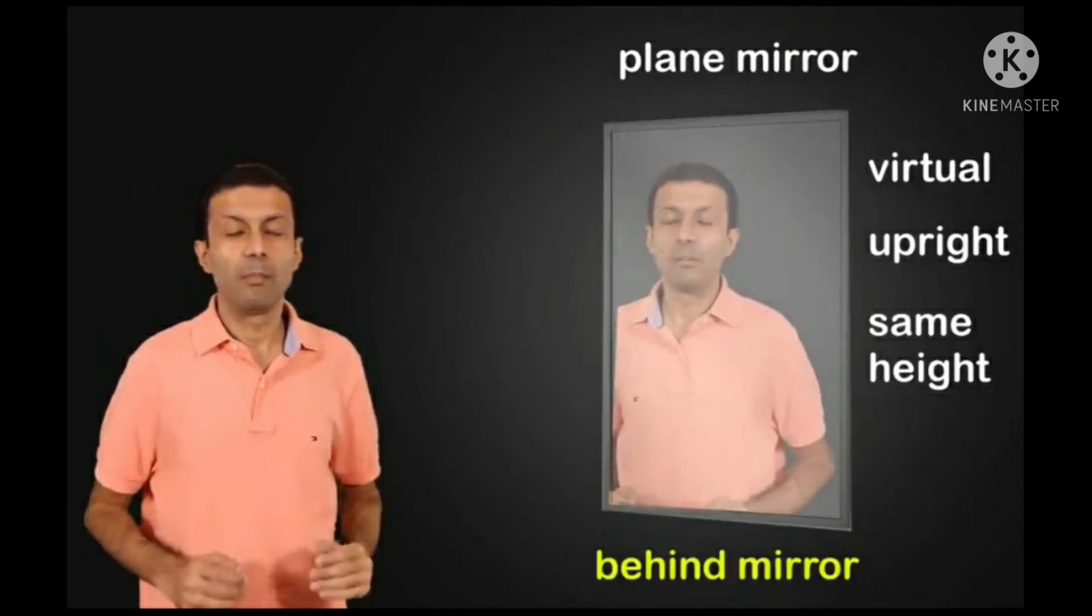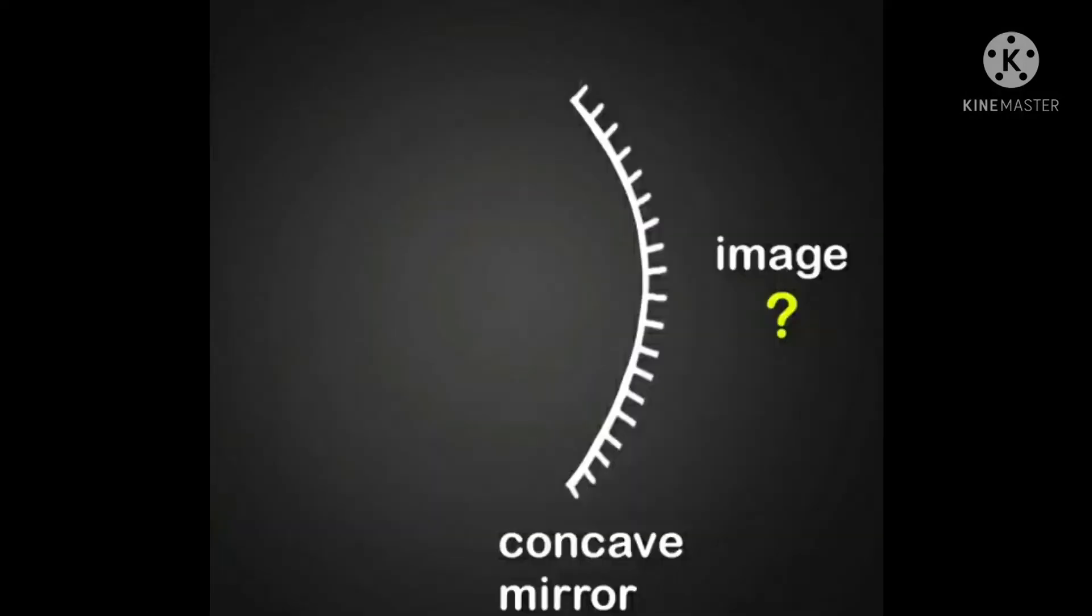That's right, it's going to be behind the mirror. The distance between the image and the mirror will be exactly the same as the distance between you and the mirror. We also know the properties of the image: it's going to be virtual, upright, and the same height as you.